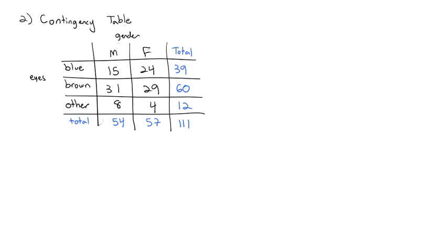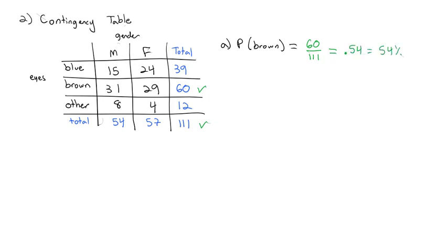Contingency tables are nice because they organize data so we can easily pull off the needed probabilities. For example, if I wanted to calculate the probability someone has brown eyes, I can easily see a brown-eyed total of 60 out of a total of 111 interviewees — so that's 60/111, approximately 0.54, or 54%.